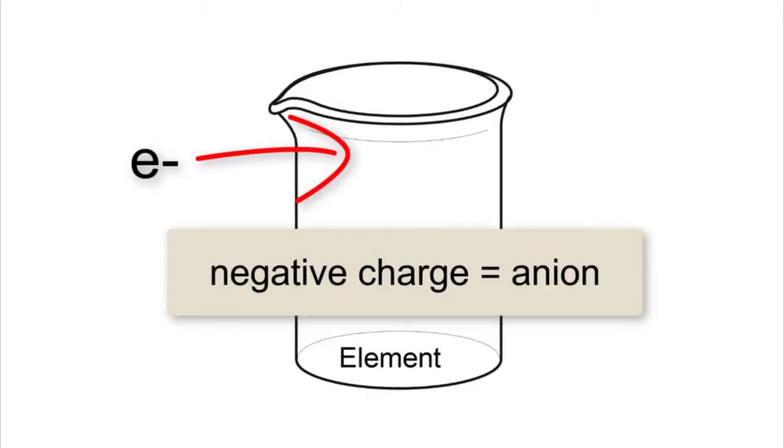The second type of ion is an anion. An anion is when an element gains an electron and the resulting ion has a negative charge.